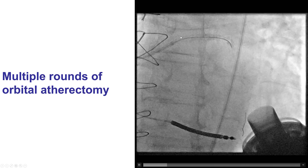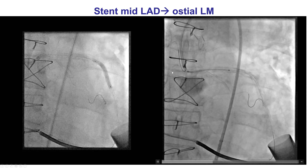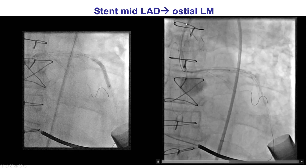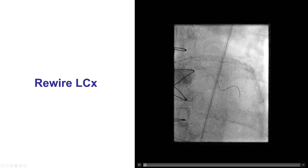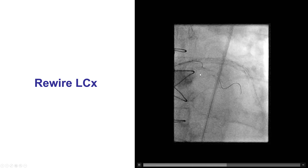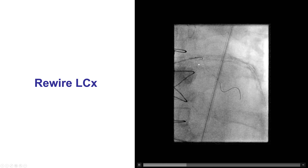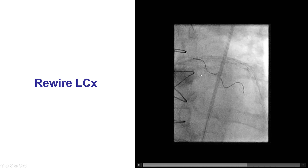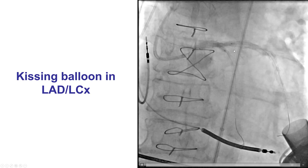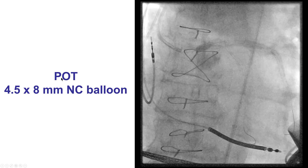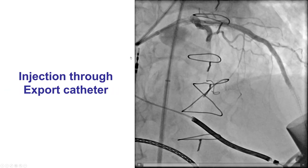Removing the circumflex wire during atherectomy is important to avoid potential fracture of the wire when the atherectomy crown reaches it. We then placed stents in the middle LAD all the way to the ostium of the left main, jailing the circumflex after inserting a guide wire into it. We rewired the circumflex using a Sasuke dual-lumen microcatheter, which is very useful for facilitating side branch re-access after jailing. We then performed kissing balloon inflation in the LAD and circumflex, followed by final proximal optimization with a 4.5 by 8 mm NC balloon, providing a nice result.